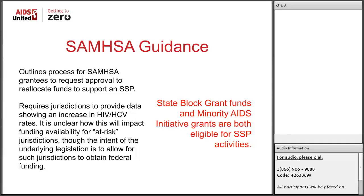SAMHSA released their guidance early this month. So far there have been no FAQs or clarifications, and no webinar to discuss it. Within that guidance, the grants determined eligible for use for an SSP program through SAMHSA include the SABG block grants — the Substance Abuse Prevention and Treatment block grants, barring their mandatory funding requirements around prevention — as well as about five capacity-building grants aimed at expanding HIV care and treatment in various substance use contexts, and the Minority AIDS Initiative Continuum of Care grants.